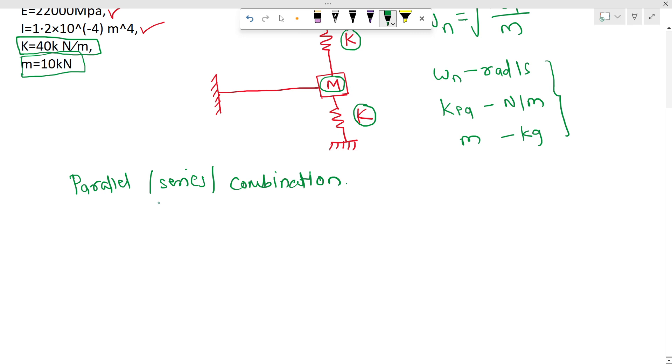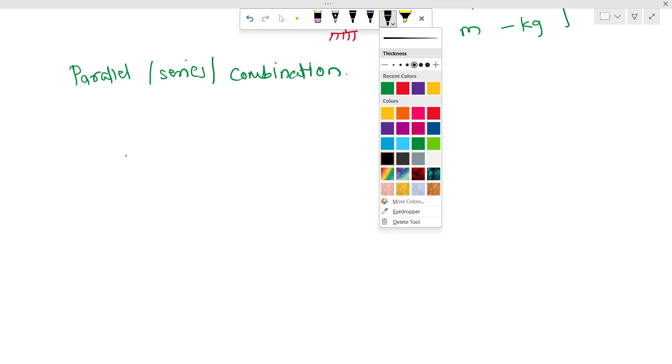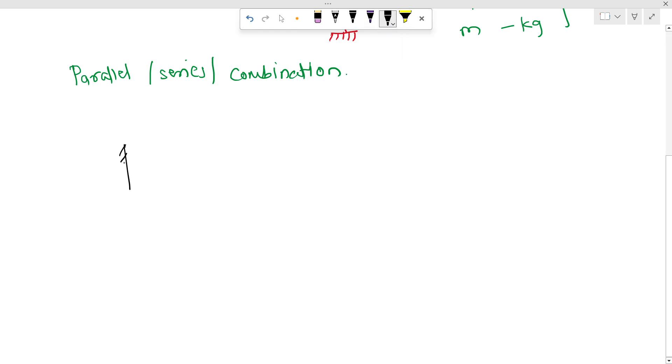So if I redraw the figure, this is the cantilever beam having mass m, then here one spring and there is another spring.